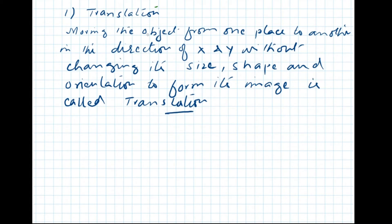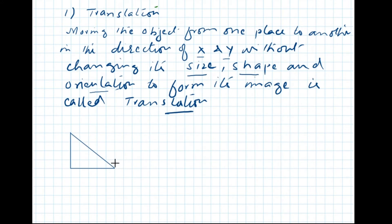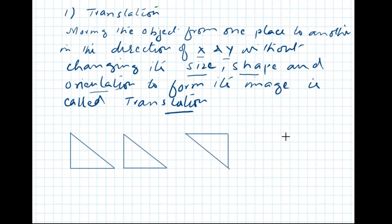To explain these concepts, I am going to draw different triangles having the same size, shape, and orientation, and also with different orientations as well. The first triangle has five squares as the base and four squares as the perpendicular. Another triangle also has five squares as the base and four squares as the perpendicular, and a third triangle has the same dimensions.